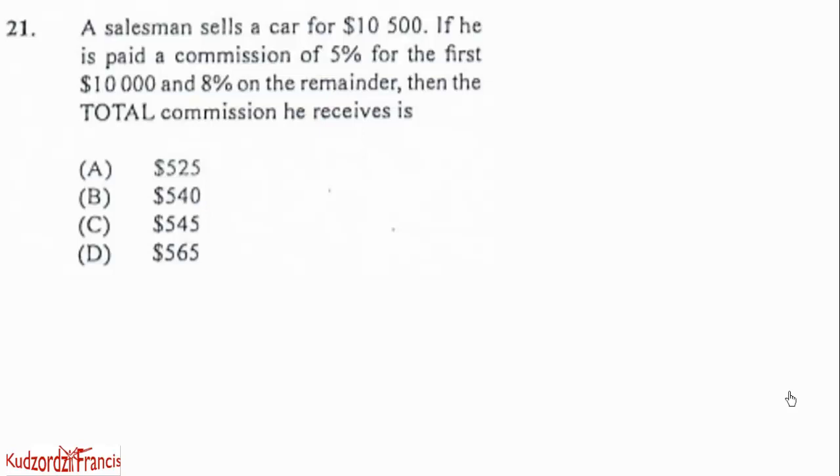We have question 21. A salesman sells a car for $10,500. If he is paid a commission of 5% for the first $10,000 and 8% on the remainder, then the total commission he receives is...